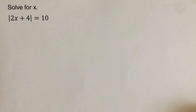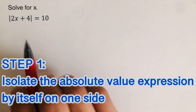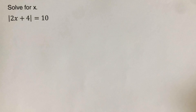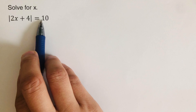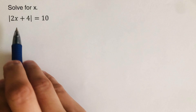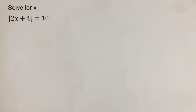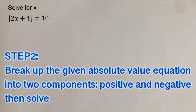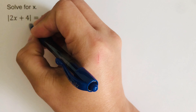Now let's go over the next example. The first step is to isolate the absolute value expression by itself on one side. As you can see, this one is already isolated and the value is not negative, so we can get a solution. Since our a is positive and the absolute value is already isolated, we move on to step two: break up the absolute value equation into two components — the positive and the negative — and solve.